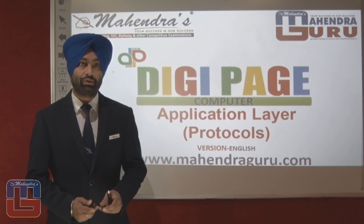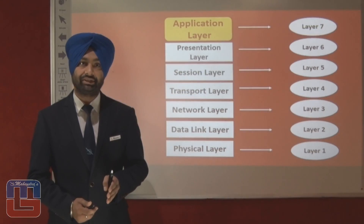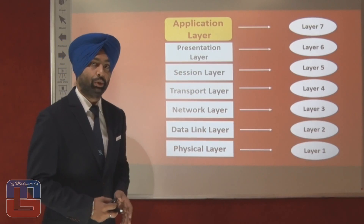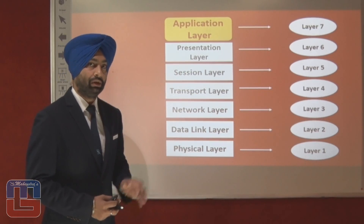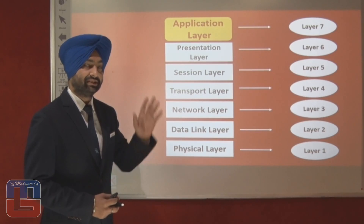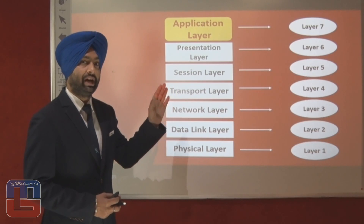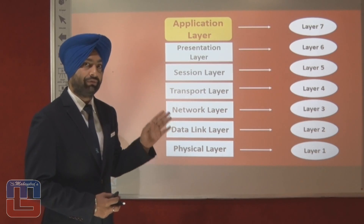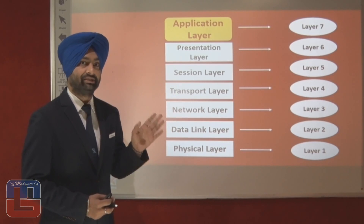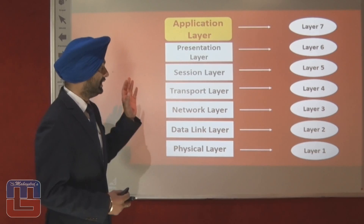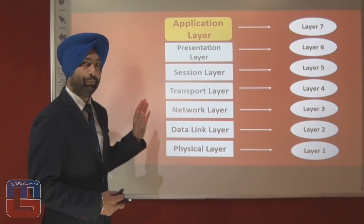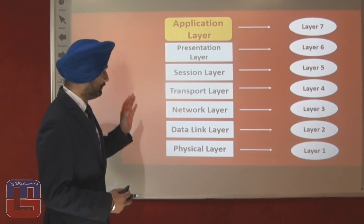Let us have a look at the location of the application layer. The application layer is the 7th layer of the OSI model, or the topmost layer of the OSI model. This 7-layer architecture is important if we consider the PO examination as well as the SOIT examination. The layer number is an important point to remember.